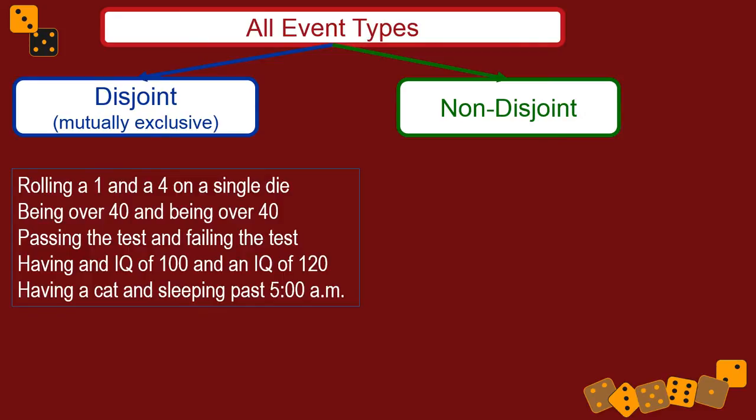Here are some examples of disjoint events or outcomes. Rolling a one on a die and rolling a four on the same die on the same roll - that can't happen. You can only roll one of those things. Being over 40 and under 40 years old at the same time - you can't. Passing a test in school and failing a test in school - you can't do those things.